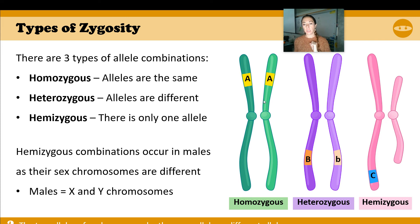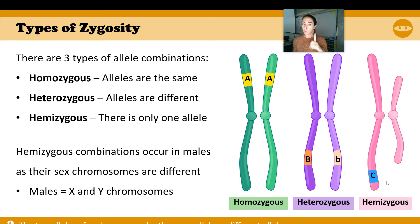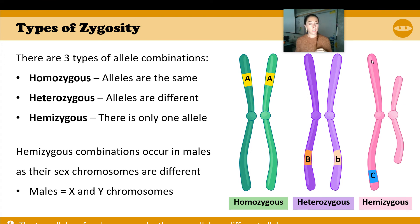If I have homozygous alleles, they are the same — two capital letters or two lowercase letters. It doesn't matter if they're dominant or recessive; homozygous means the same. Hetero means opposite, so on one side you have capital, the other side recessive. Hemizygous means there's only one allele. For instance, on your X and Y chromosomes, males only have one X chromosome, so they're called hemizygous. We talked about some sex-linked things — hemizygous combinations occur in males, and the Y doesn't cover it up. So homo, hetero, hemi — put it in your notes.